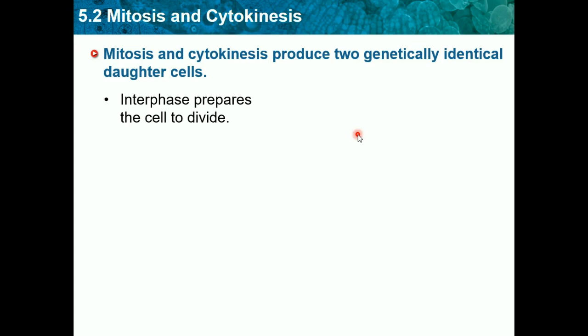It starts with one cell, and you get two because it splits in half — it makes a twin basically. The two ending cells are called daughter cells. So remember: your toe does mitosis because 'mitosis' has the word 'toe' in it. Meiosis is only for sex cells, which we will learn later.